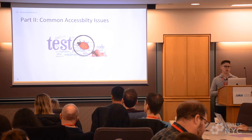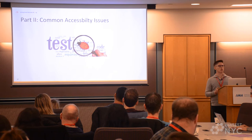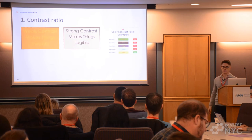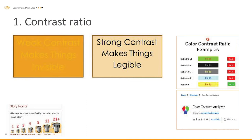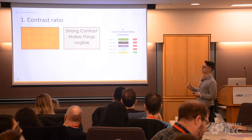Moving to section two — common accessibility issues. Has everyone played Scrum Poker or pointed stories in JIRA? We're going to do a little activity where we'll point some of these issues. The first issue is contrast ratio. On the left-hand side it's very difficult to see. Contrast ratio is the brightness difference between two colors on top of each other, and the minimum acceptable criteria is 4.5 to 1.